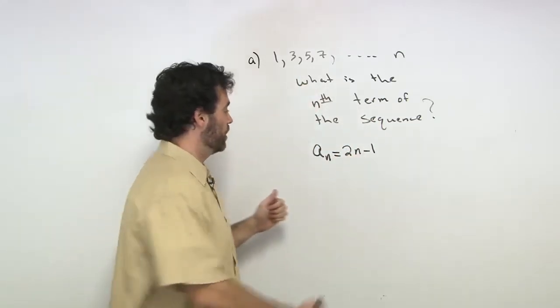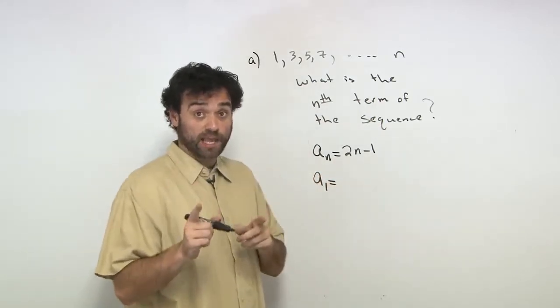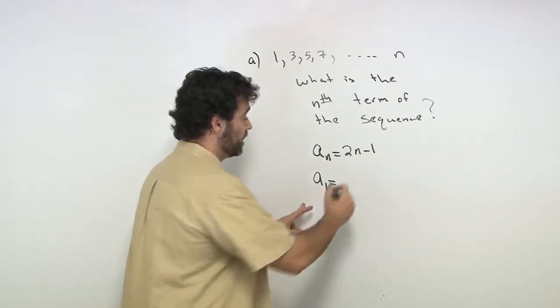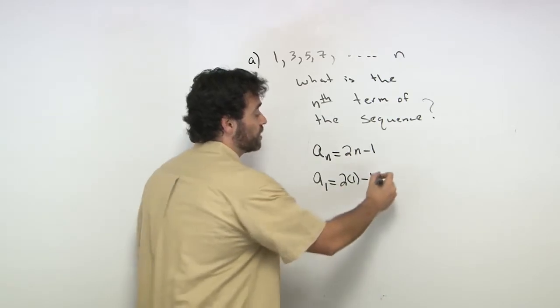And I know it's minus 1, because if we put in A_1, the first term of the sequence, this is a good check. You want to check to see if this is indeed it. I'll say that 2 times 1 is 2 minus 1 is 1.